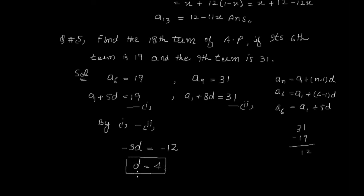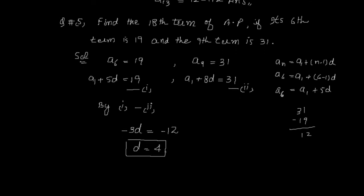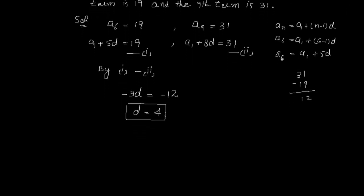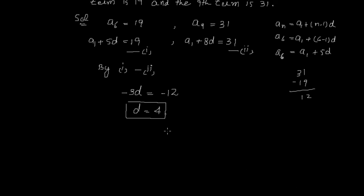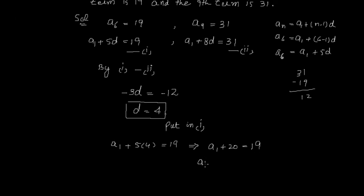D की value 4 calculate कर ली। अब यही D की value equation (1) में लगाते हैं: A1 + 5×4 = 19, A1 + 20 = 19, A1 = 19 − 20 = −1। तो A1 की value भी आ गई।